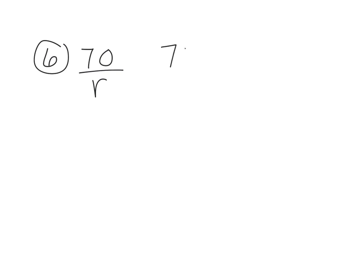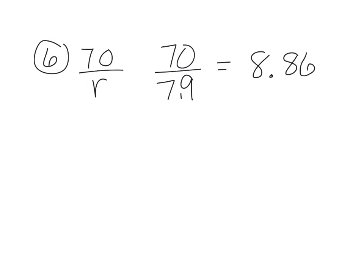Number six: what is the doubling time of the population? We use the formula 70 over R. The last problem gave us R as 7.9. When you plug this in your calculator, it's going to come out in years. Do not multiply by 100 here — the answer already comes out as years because R is already a percentage. Your answer is 8.86 years. You can round to three significant digits here, since the full answer is 8.86075949... and so on. This is exactly where the three significant digit rule is helpful.